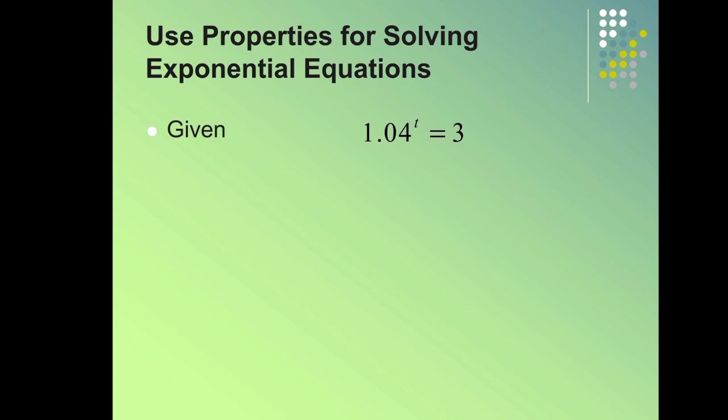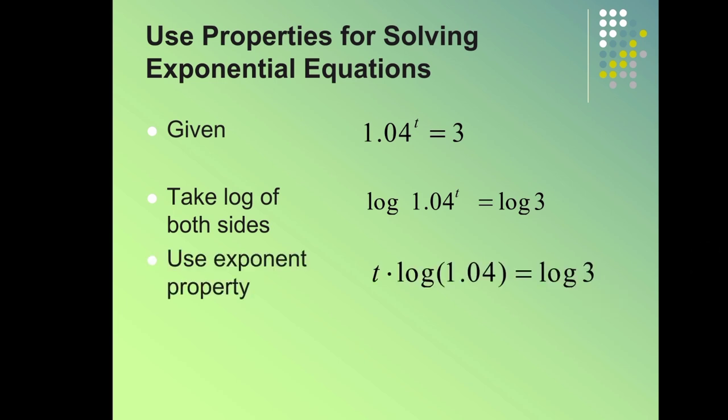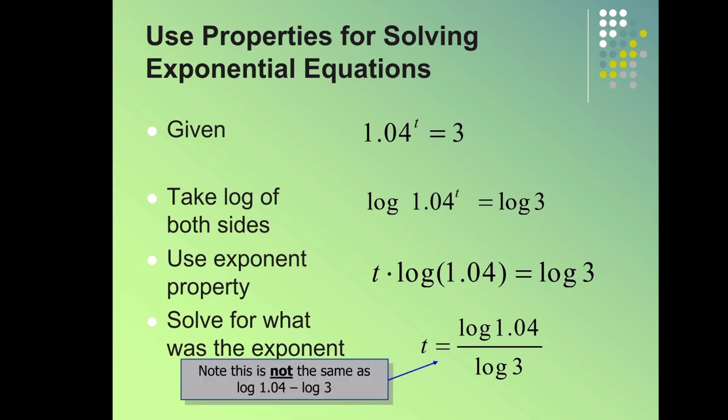Use properties for solving exponential equations. Given 1.04 to the t equals 3, take log of both sides. Use exponent properties: t times log 1.04 equals log 3. Solve for the exponent: t equals log 3 divided by log 1.04. Note this is not log of 1.04 minus 3.